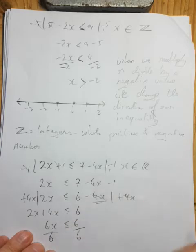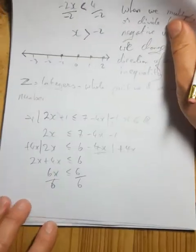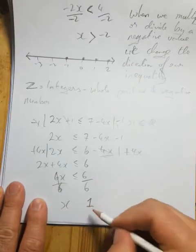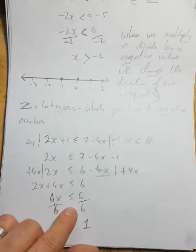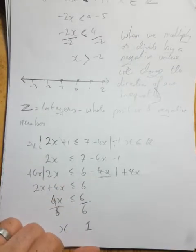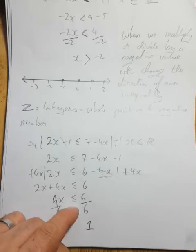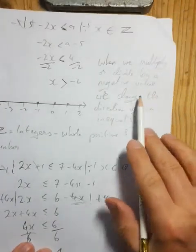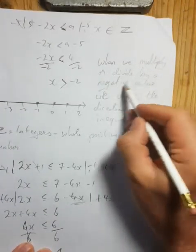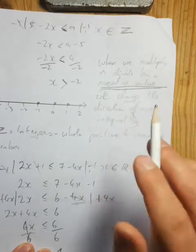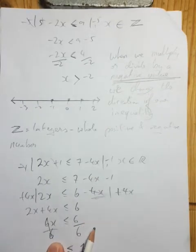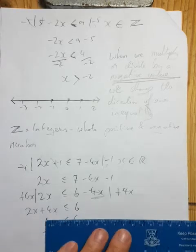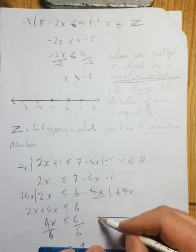I don't want 6x, I want 1x, so divide both sides by 6. 6 divided by 6 is 1, so x is less than or equal to 1. I did not change the direction of the sign this time — the rule is we change direction only when we multiply or divide by a negative value. I divided by positive 6, so it stays as x is less than or equal to 1.